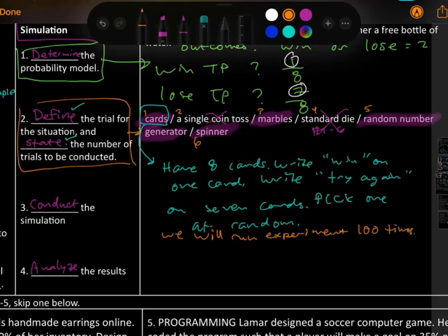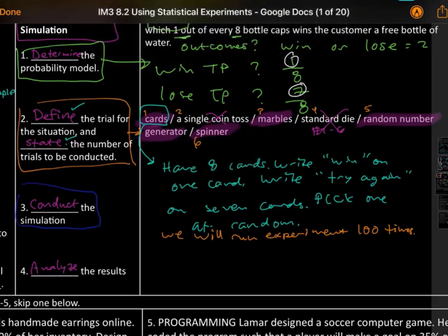So turn the cards over, pick one, record the results. Flip it back over and do that 99 more times. Okay. So to conduct this simulation, you actually just do it. You would just conduct it. And then you would analyze the results. Record it.